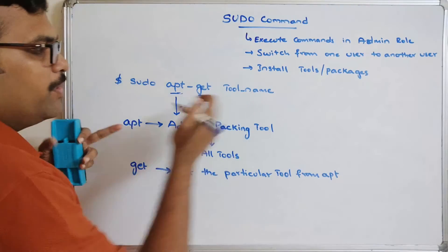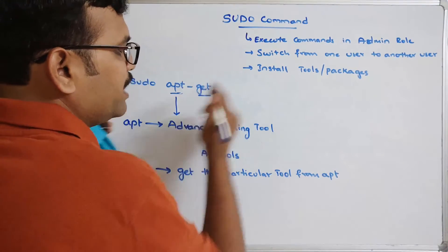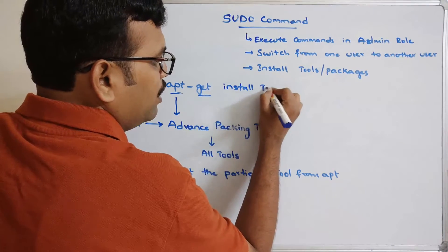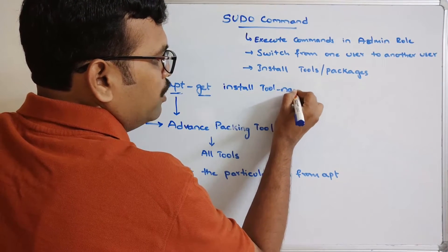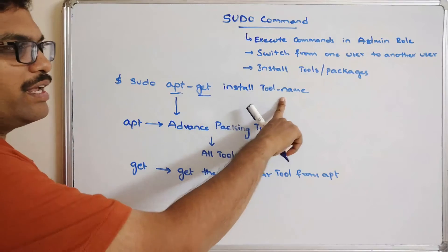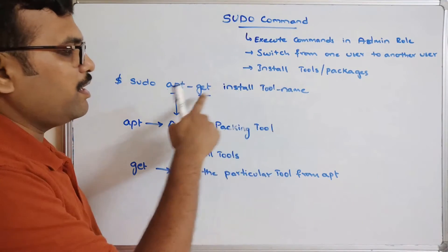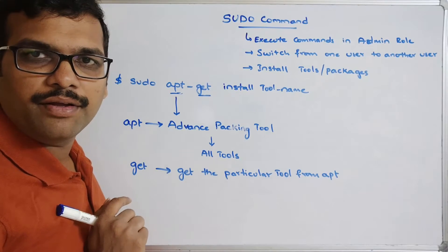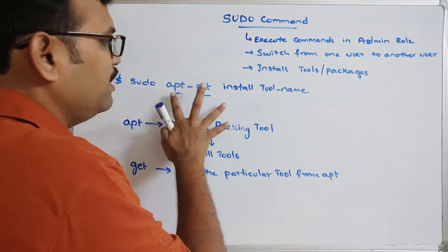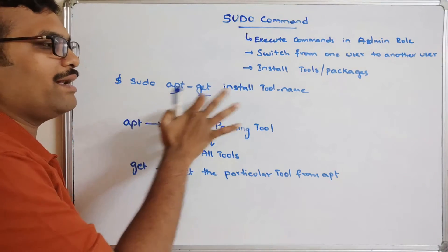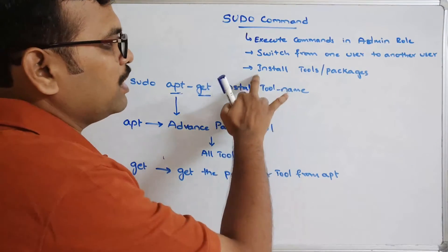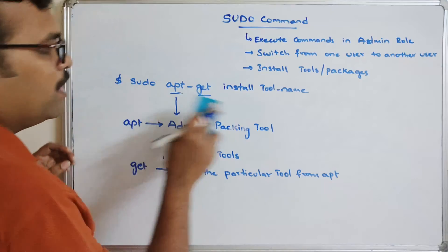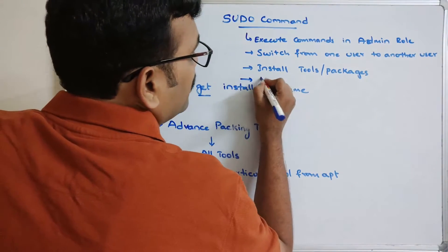After 'apt-get', the next part is 'install' followed by the tool name. Whatever tool name you provide will be retrieved from apt and installed in your environment. So the full command is: sudo apt-get install [tool name]. This is the importance of that command for installing tools and packages.